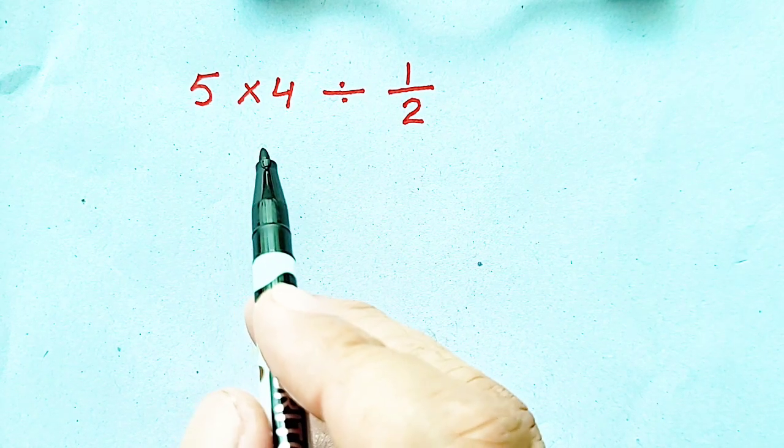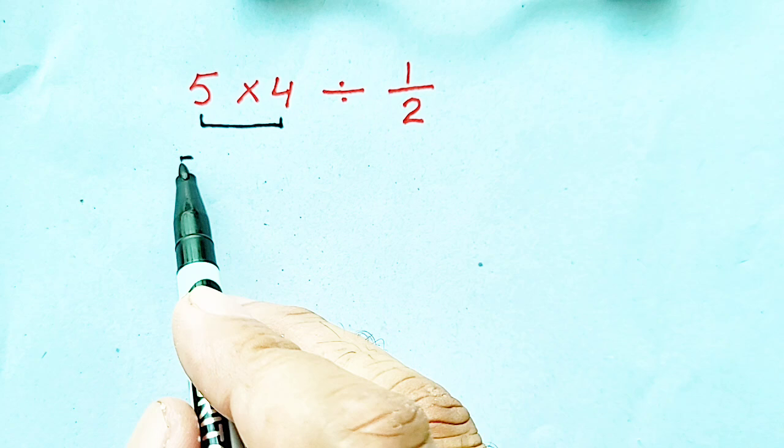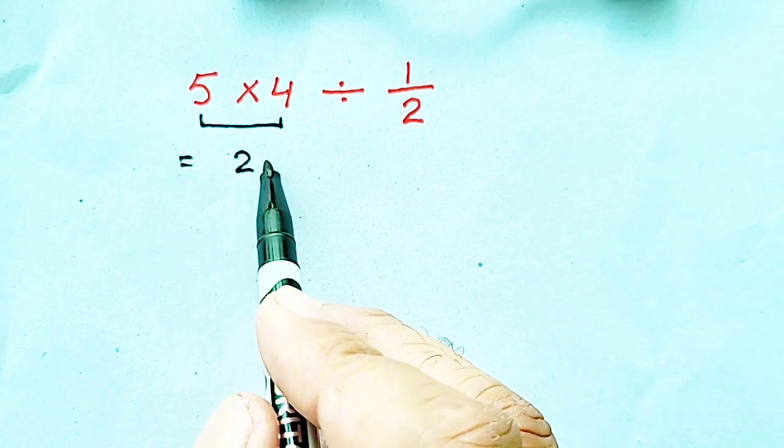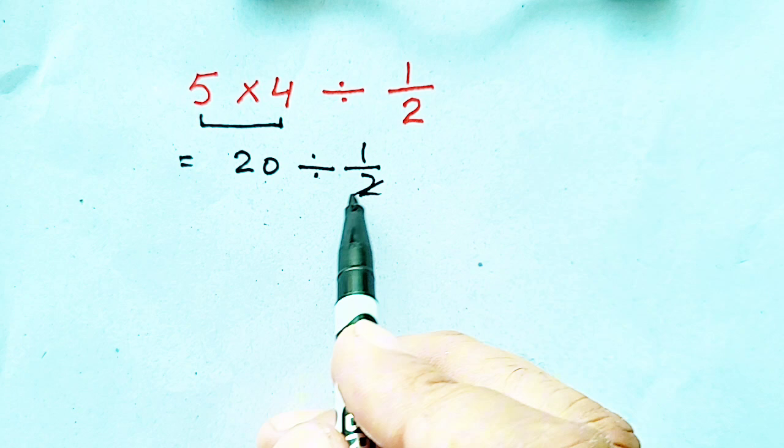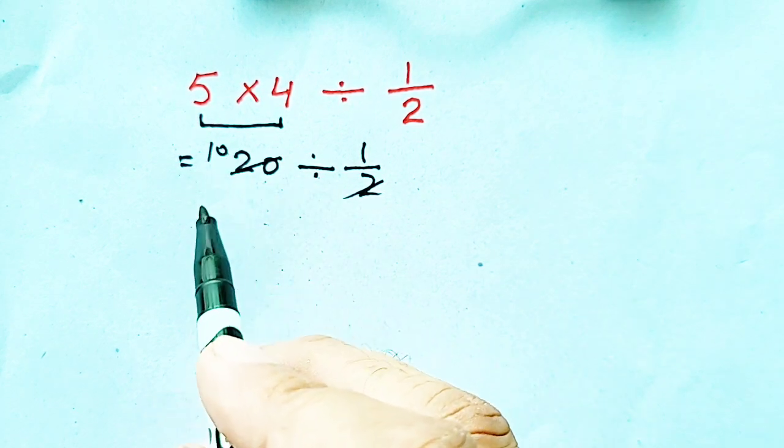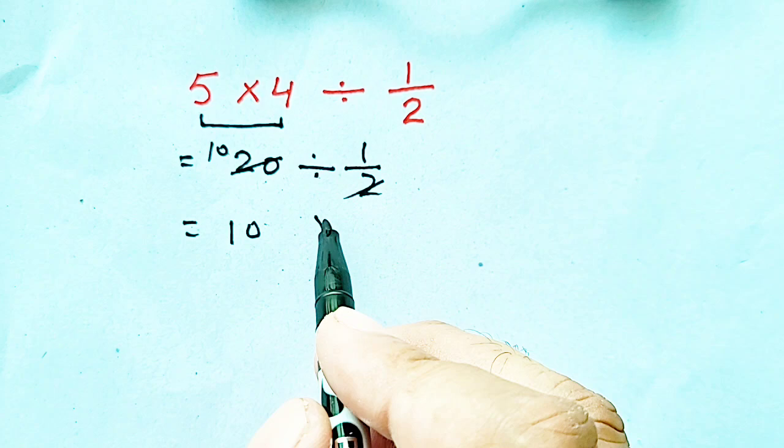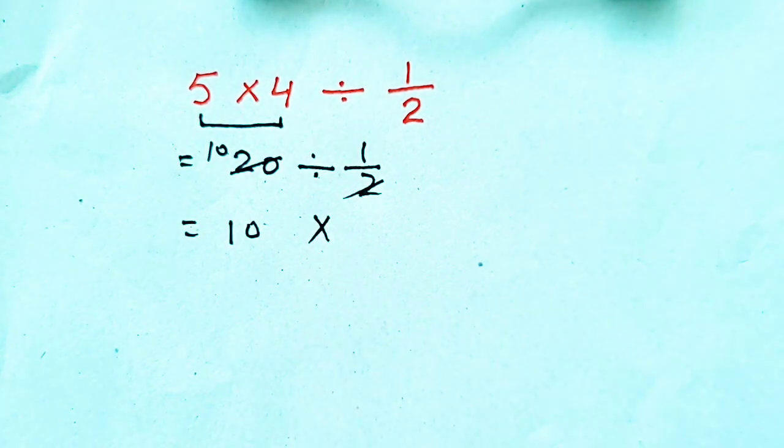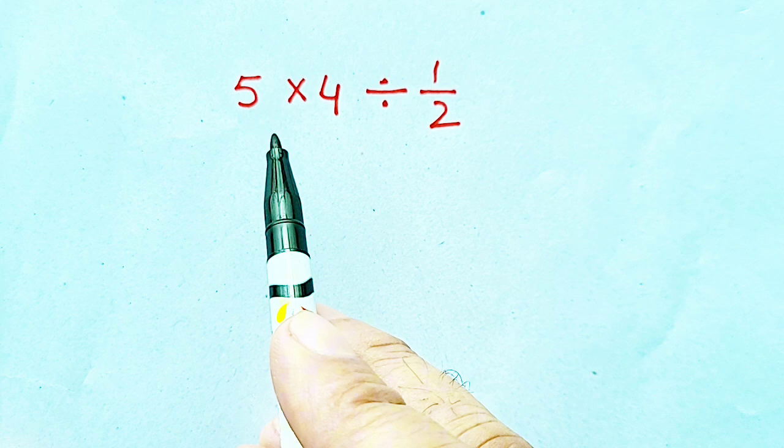Hello, welcome to my YouTube channel. 5 times 4 divided by 1/2 equals 20 divided by... 2 tens are 20, so our answer will be 10, but this is a wrong method to get the correct answer. We